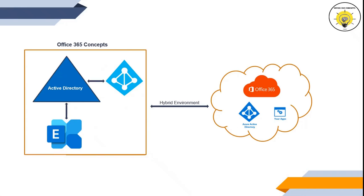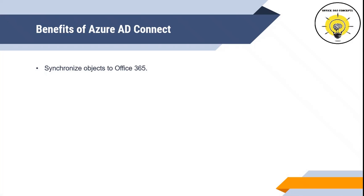With Azure AD Connect, we can integrate our on-premise Active Directory with Office 365 and deploy a hybrid identity model. There are many other benefits of the Azure AD Connect tool. The first benefit is that we can synchronize objects from Active Directory to Office 365. When I say objects, these include users, contacts, groups, and devices — all of these recipients are called objects in Active Directory.